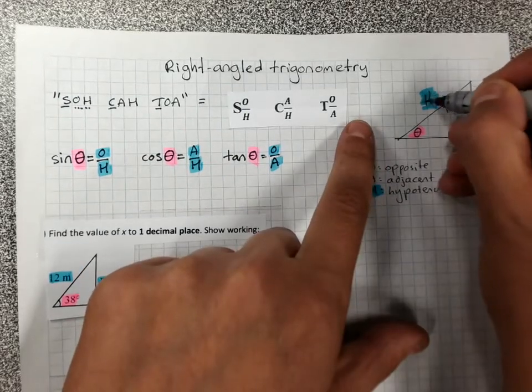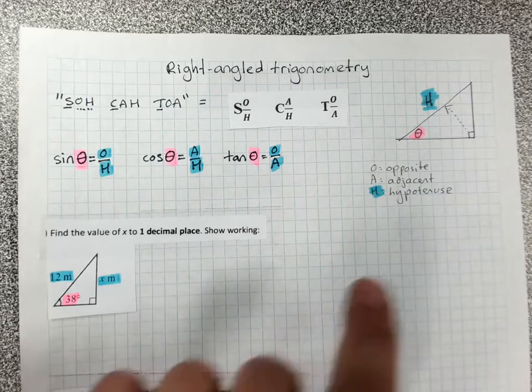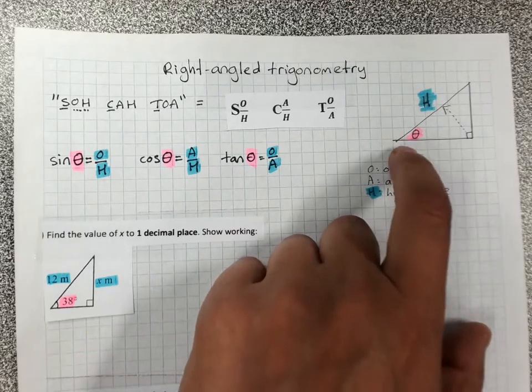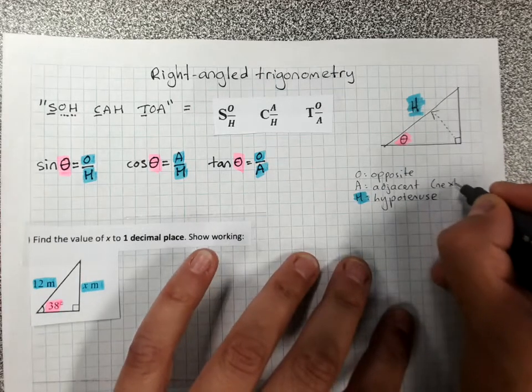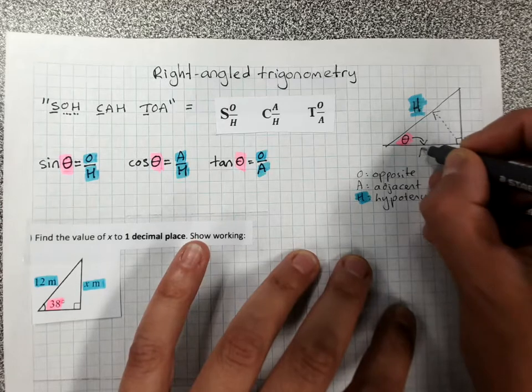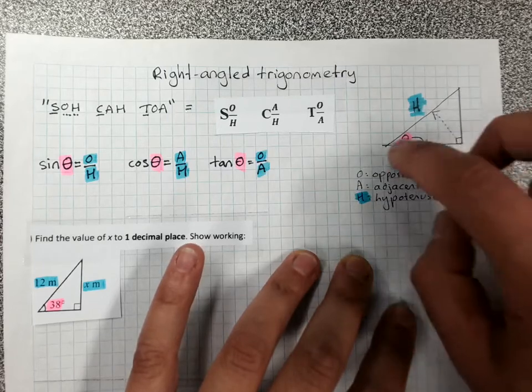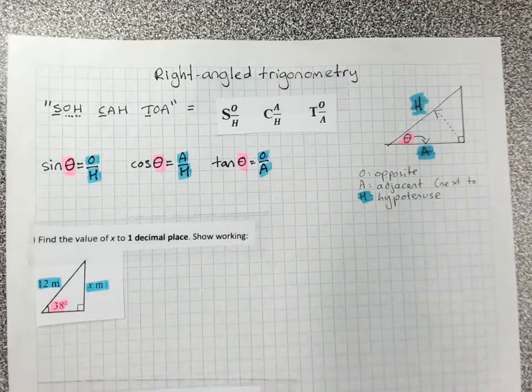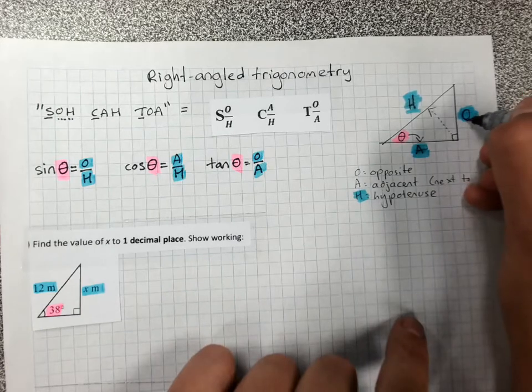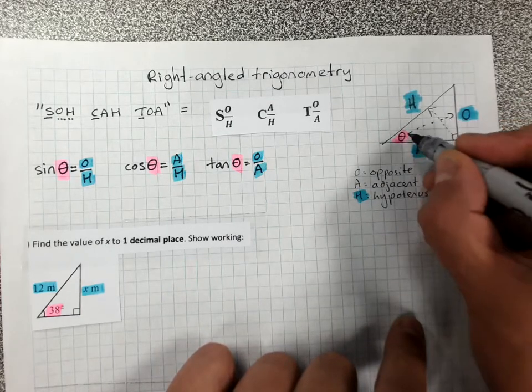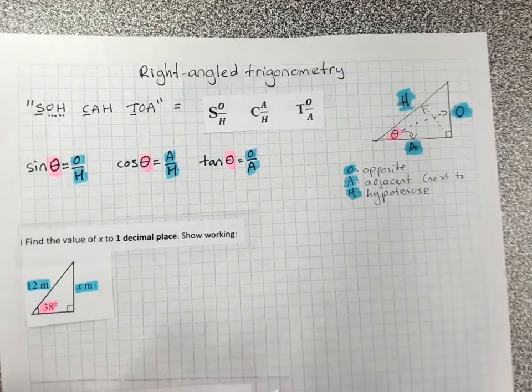I'll do that in a better pen. The opposite and the adjacent depend on this angle. So we mark the angle in pink first. Adjacent means next to. So this side here is the adjacent because it's next to the angle, not the right angle. Opposite and adjacent care about the other angle that's marked. And the other side is the opposite because it's opposite theta, the angle. So our three sides, opposite, adjacent and hypotenuse.